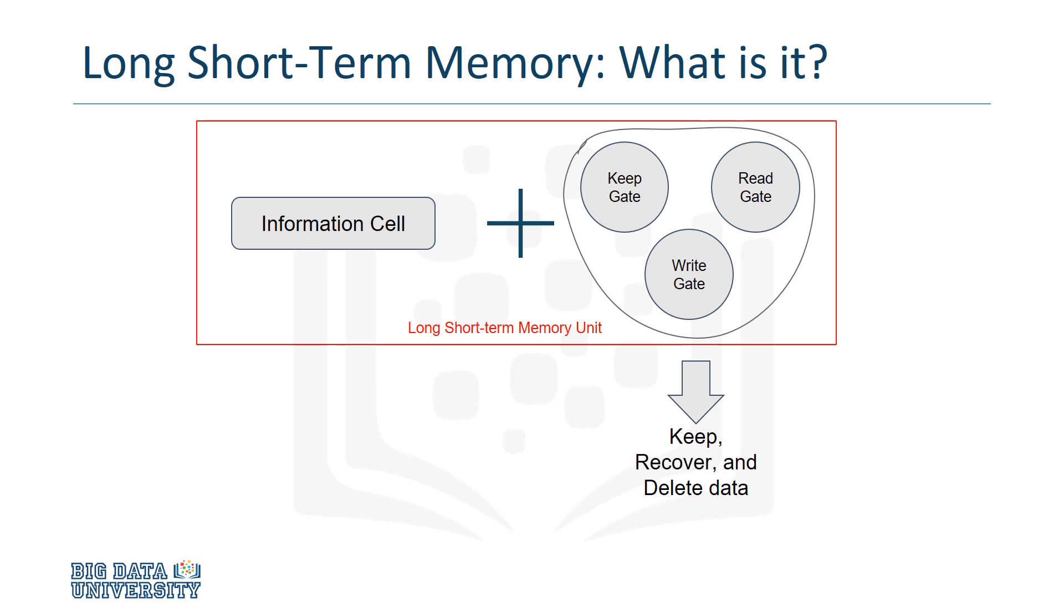The write gate, or the input gate, is responsible for writing data into the memory cell. The output, or read gate, reads data from the information cell and sends that data back to the recurrent network. And the keep gate, or forget gate, maintains or deletes data from the information cell.